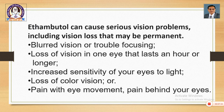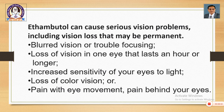Ethambutol can cause serious vision problems, including vision loss that may be permanent. Side effects include: blurred vision or trouble focusing, loss of vision in one eye lasting an hour or longer, increased sensitivity of the eyes to light, loss of colour vision, pain with eye movement, and pain behind the eyes. Every drug has benefits but also limitations and side effects, and must be given under expert supervision.